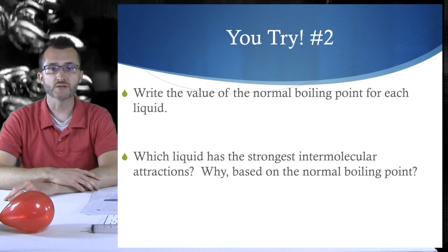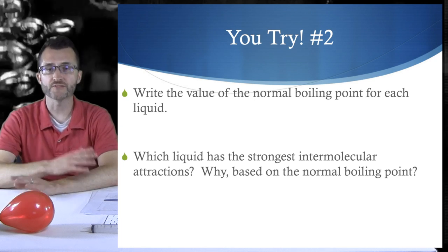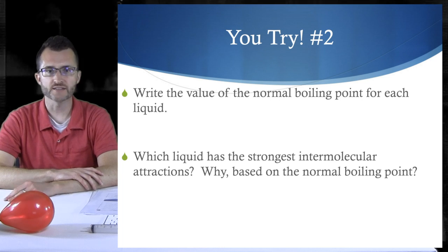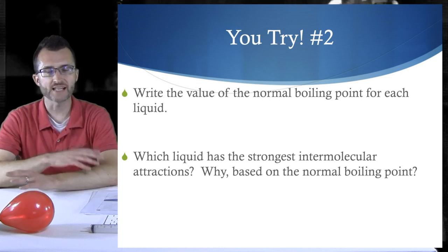You try number two. Write the value of the normal boiling point for each liquid. Which liquid has the strongest intermolecular attractions? Why? Based on the normal boiling point. Well, that's going to do it for today's episode on vapor pressure and boiling. It's been emotional.